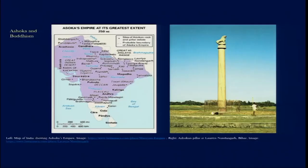Interestingly, Ashoka's renouncing of political warfare did not mean he gave up his kingdom, army, or the people required to run a state. What emerged instead was this new idea of Dhamma Vijaya — victory through religion — not a victory associated with warfare but through the help of spreading Buddhism.